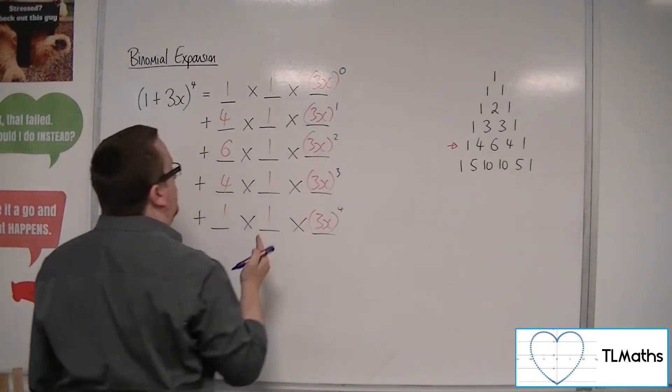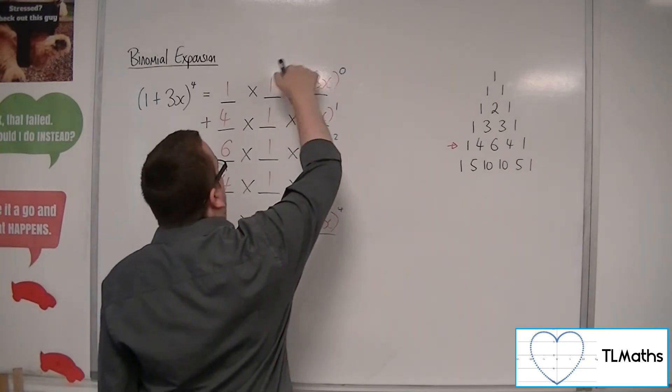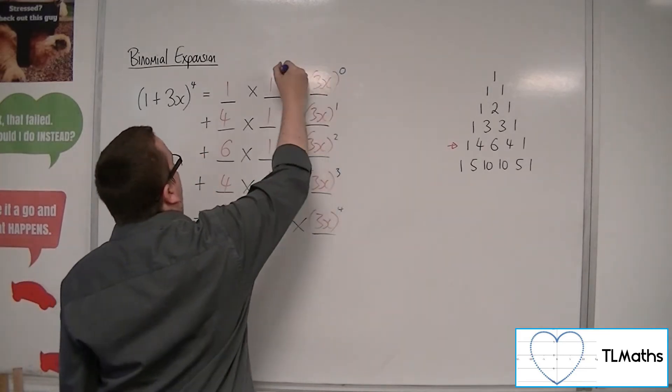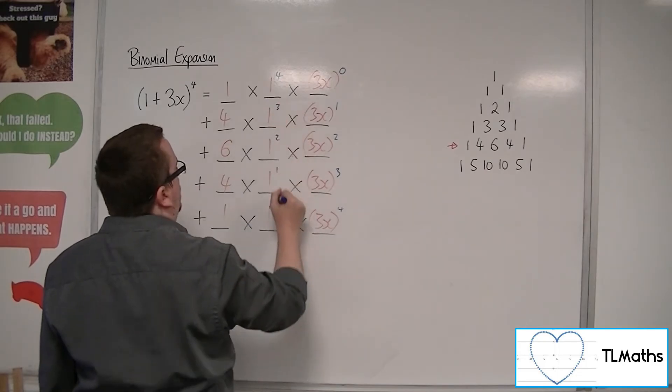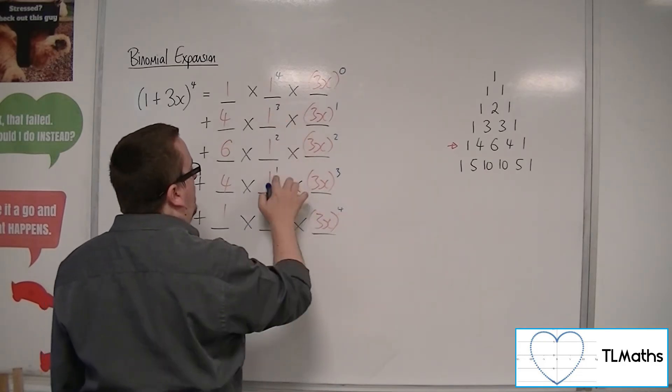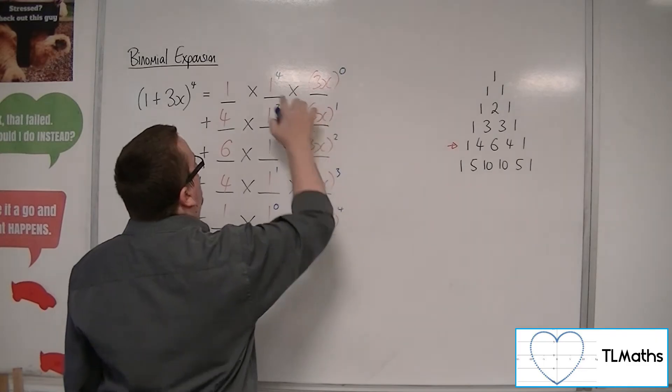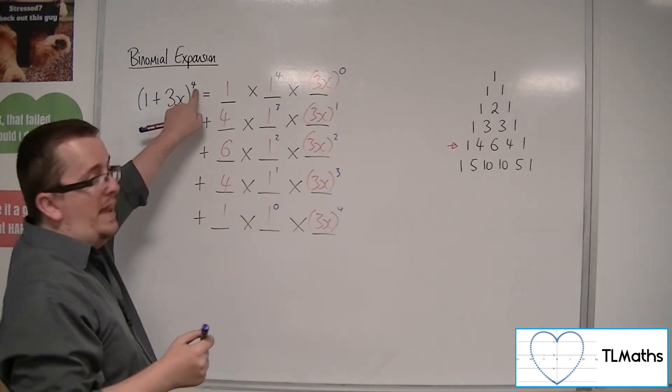The powers in the middle row need to make sure that they're the opposite of that. So 4, 3, 2, 1, 0. So these powers, as you can see, they will always add up to 4, the number that is there.